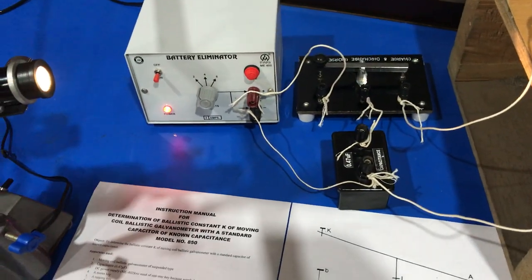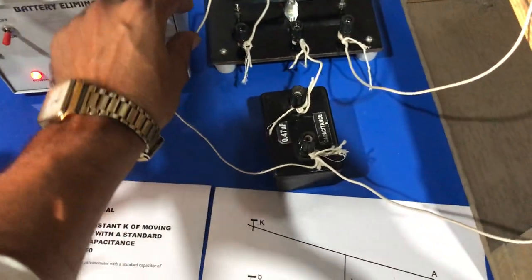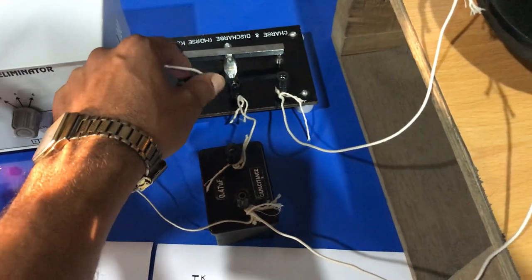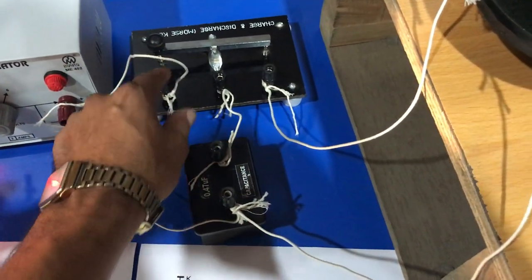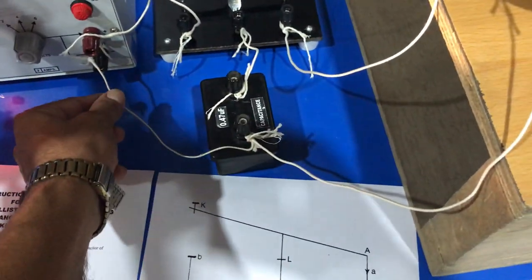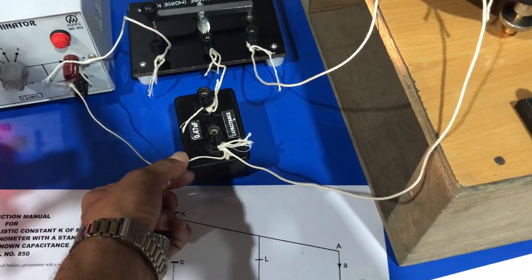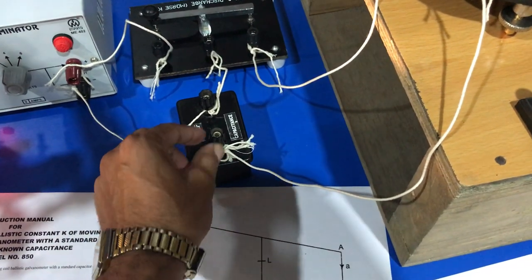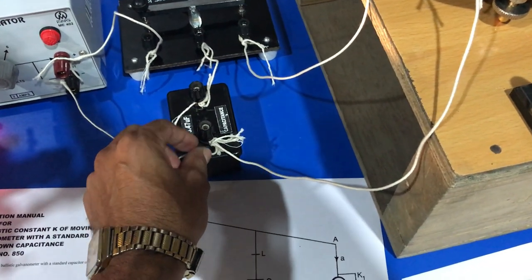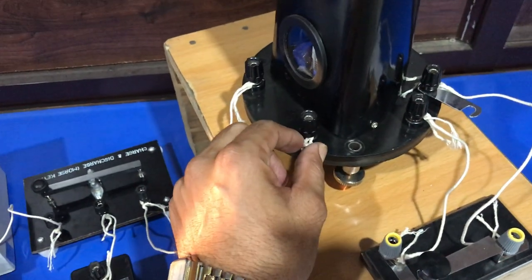The positive terminal of the DC battery is connected to the C point of the Morse key, and the negative terminal of the battery eliminator is connected to one end of the capacitor. The same end of the capacitor is connected to the ballistic galvanometer.